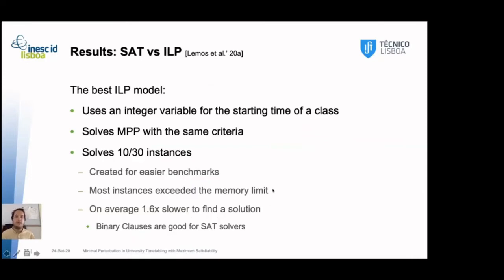So, we also compared our model with an integral linear programming model. The main difference of this model is that it uses an integral variable for the starting time of a class. It actually solves the minimal perturbation problem with the same criteria. However, this solution only solves 10 out of 13 instances, but please bear in mind it was created for easier benchmarks. Interestingly enough, most instances exceed the memory limit, and those that don't exceed the memory limit are 1.6 times slower to find the solution than the MaxSAT solver. This can be probably explained by the fact that binary clauses are really optimized for SAT solvers, and not so much for integral programming solvers.